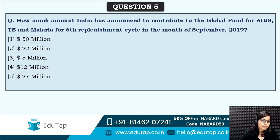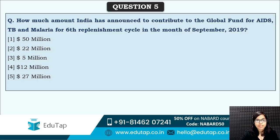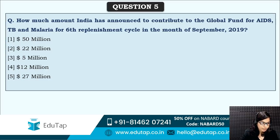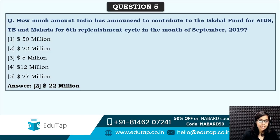Next: how much amount has India announced to contribute to the Global Fund for AIDS, TB, and Malaria for the sixth replenishment cycle in September? Most of you are saying option two — that is 22 million dollars. Yes, that is correct. India has contributed this much to the Global Fund for AIDS, TB, and Malaria. This is a very important question that can be asked in the exam.